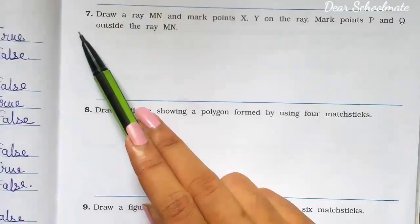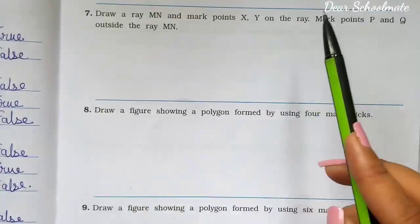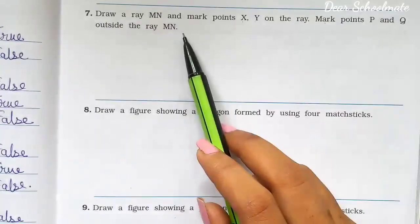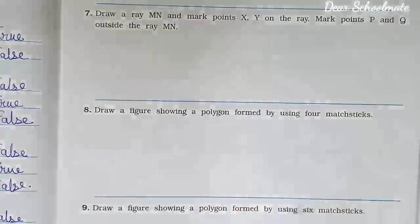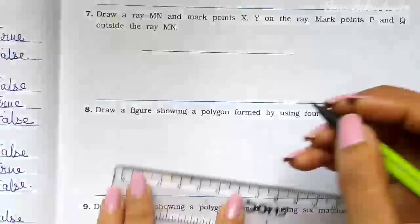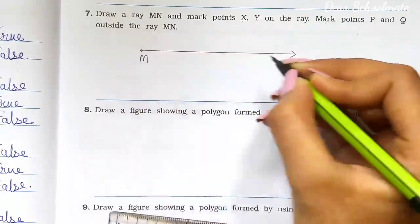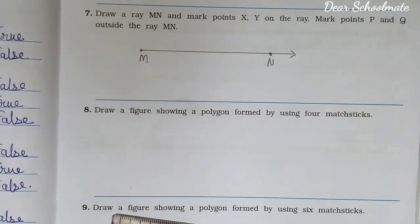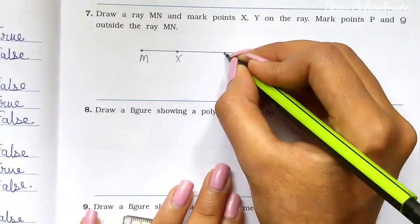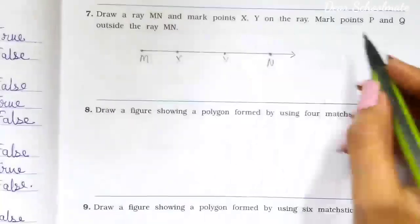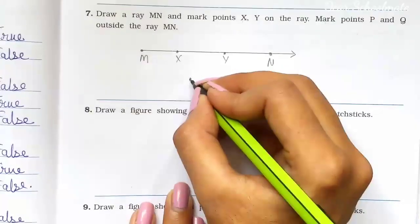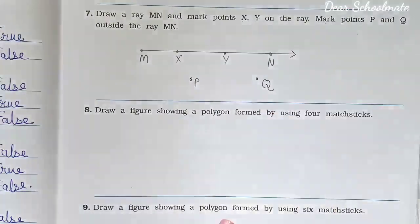Next is question number 7: Draw a ray MN and mark points X, Y on the ray. Then mark points P and Q outside the ray MN. P and Q should not be on MN — they should be outside MN. So first we draw ray MN. Then we mark points X and Y on the ray. Then P and Q are placed outside the ray, anywhere not on MN.